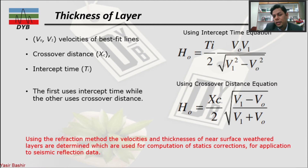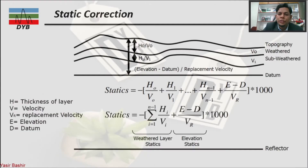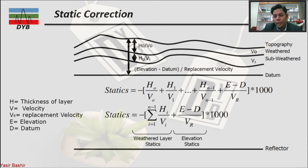Using the refraction method, the velocity and thickness of the near-surface weathered layer are determined, which are used for computing the static correction for seismic reflection data. In the graphical example, once we find the thickness of each layer — V0, V1, and so on — we define the datum plane below them. We already know the thickness of the first and second layers across the subsurface zones.